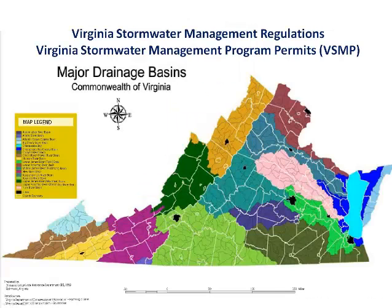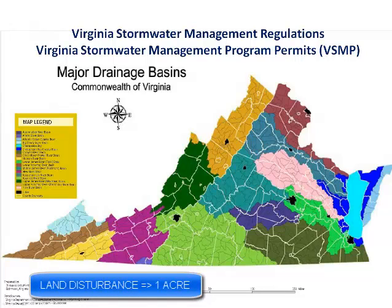The stormwater management regulations have evolved over time. The latest Virginia stormwater management and the VSMP permit regulations are developed by the Department of Conservation and Recreation, or DCR. The regulations require that all operators shall develop, implement, and enforce procedures to reduce pollutants in any stormwater runoff to the regulated small MS4 from construction activities. Any land disturbance of one acre or more comes under the purview of these regulations.